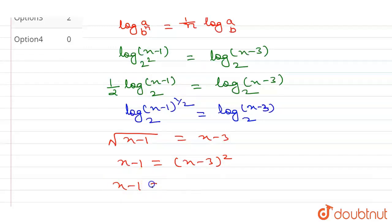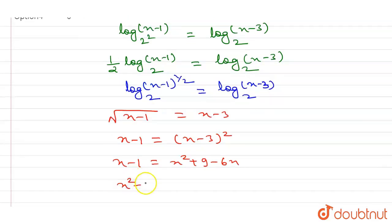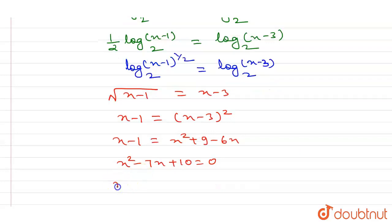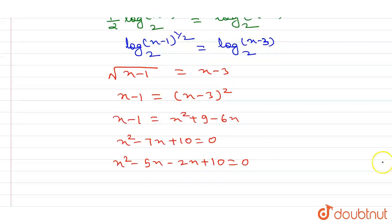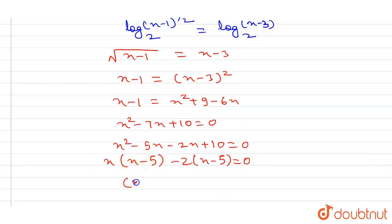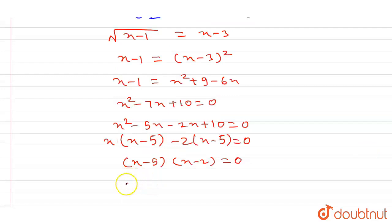On solving, x minus 1 equals x squared plus 9 minus 6x — using (a minus b)² = a² + b² minus 2ab. From here we get x squared minus 5x plus 10 minus 2x equals 0, which gives x squared minus 7x plus 10 = 0. Factoring: x(x minus 5) minus 2(x minus 5) equals 0, so x minus 5 equals 0 or x minus 2 equals 0, giving x equals 5 or x equals 2.